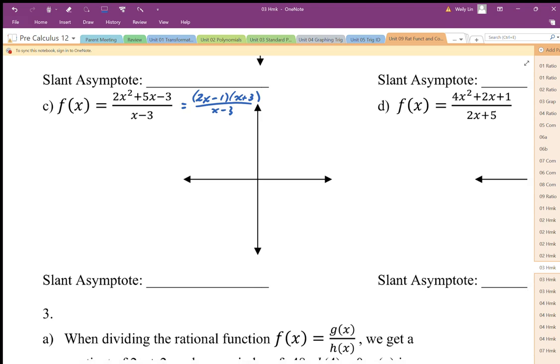So the first thing I do is factor the numerator, and I'm going to see where my zeros are in the numerator and where my vertical asymptote is in the denominator.